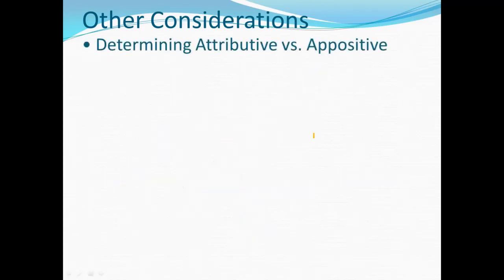Now we're ready to go on to this video's new content. We have just one topic this time: determining attributive versus appositive. In part four we talked about appositives. Just as subjects and predicates are sometimes difficult to differentiate because they're both in the nominative case, the attributive and the appositive can sometimes be hard to differentiate because either construction involves a word in the same case as another word and closely connected to it. So let's explore this question.